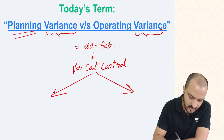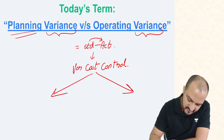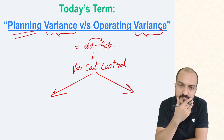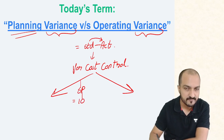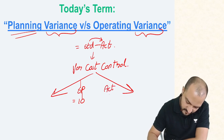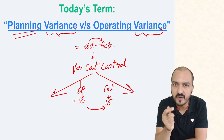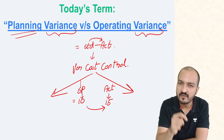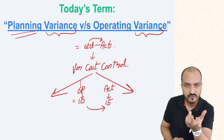Planning variance comes into picture if the change from standard to actual is not entirely your fault. For example, let's say the standard price was 10 rupees per kg for the material, and the actual price paid turns out to be 15 rupees per kg. So this means you paid 5 rupees extra. That could be seen as your mistake — because you were not able to negotiate a good price or stick to the estimated price.